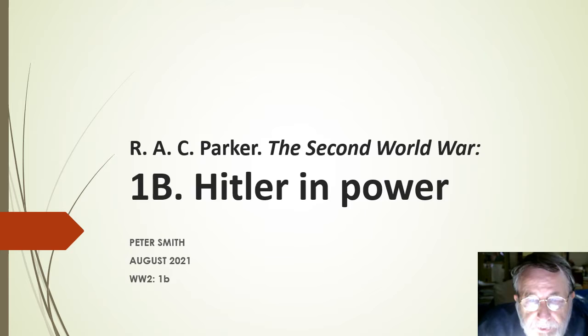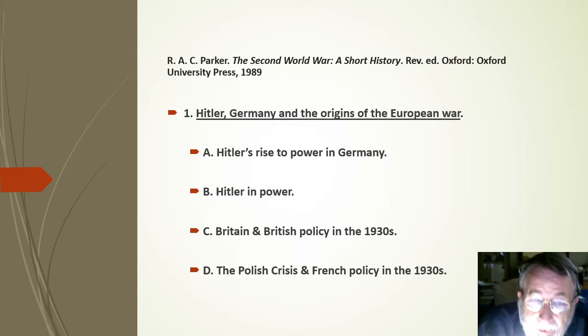Hello, this is the second of my videos on Alastair Parker's The Second World War: A Short History. This is from the first chapter on Hitler, Germany and the origins of the European War. It's setting the background in terms of political developments before the start of the war itself.